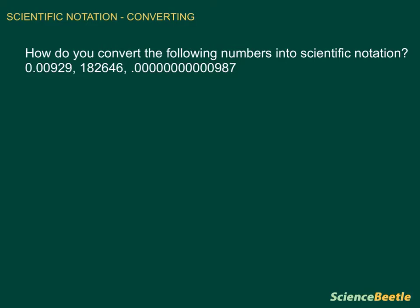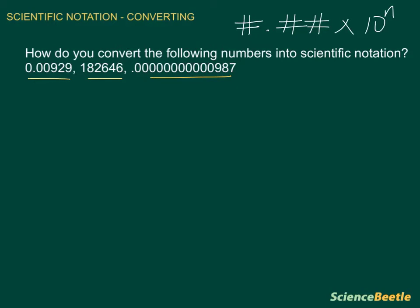In this problem, we have the following: how do you convert the following numbers into scientific notation? We've got three numbers. Remember that the notation we're looking for is a number followed by another number, times 10 to some power of n. So let's go ahead and take a look at these numbers and begin doing that.